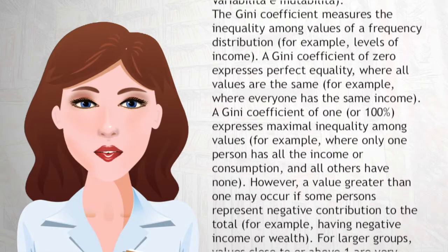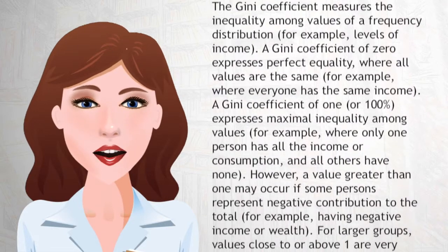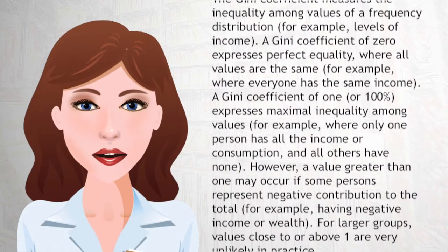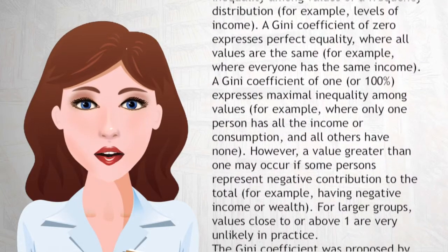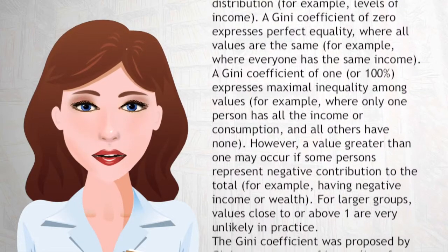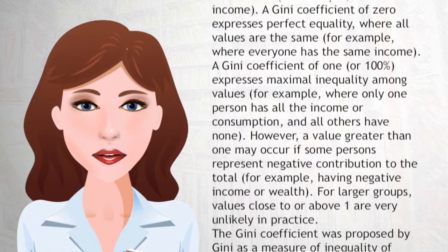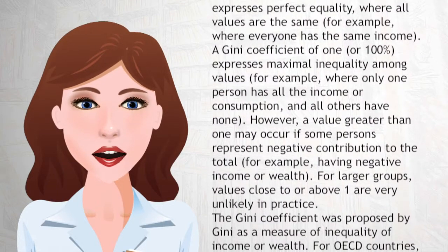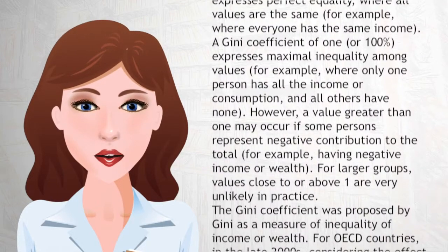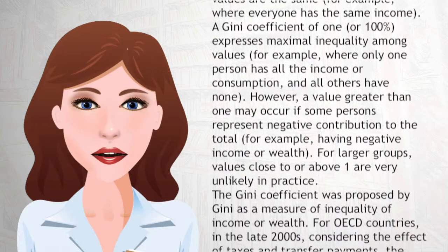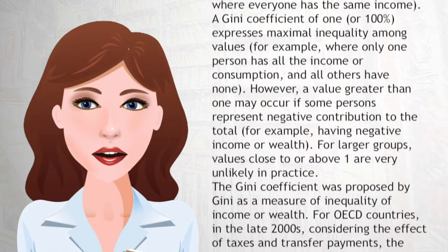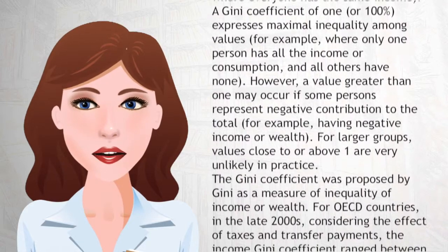However, a value greater than one may occur if some persons represent a negative contribution to the total, for example, having negative income or wealth. For larger groups, values close to or above one are very unlikely in practice.